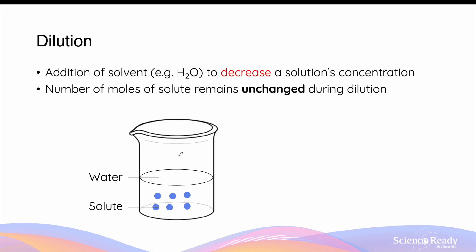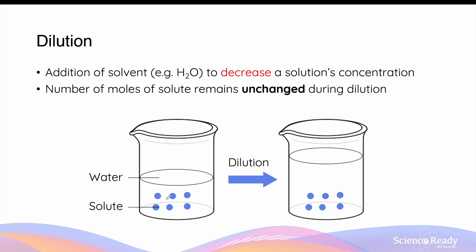Let's say I have a beaker containing an aqueous solution, and this aqueous solution contains six moles of a particular solute. If I dilute the solution by adding some arbitrary amount of water, the volume of the solution increases depending on how much water I've added, but the number of moles of the solute still remains the same — still six moles, the same as before. So the number of moles before the dilution should equal the number of moles after dilution.